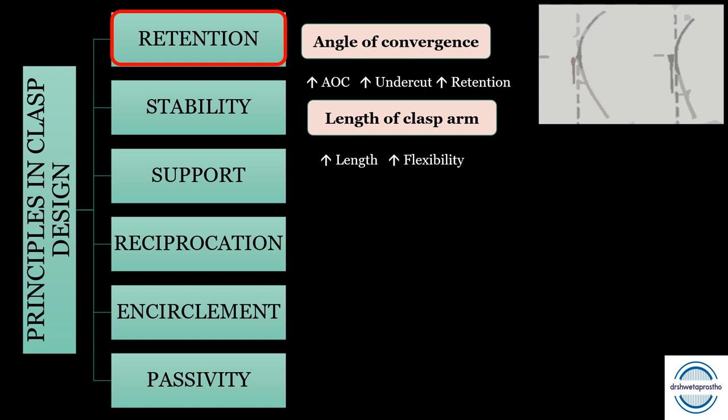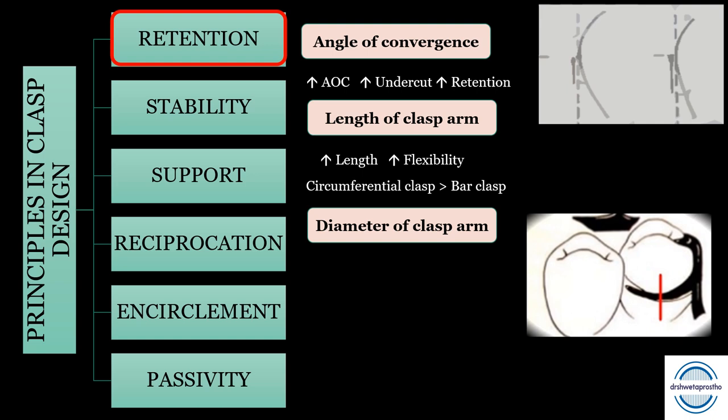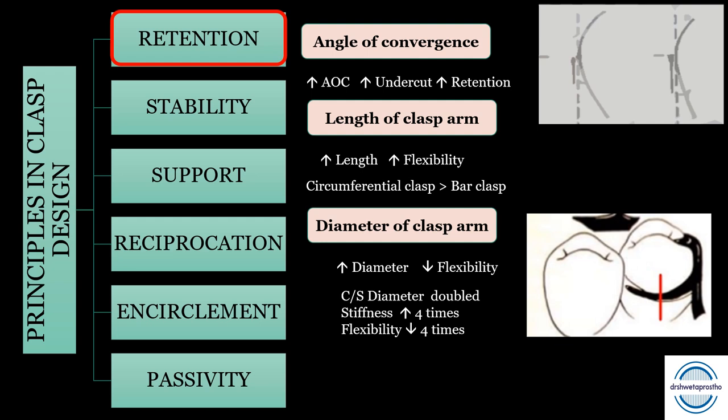The second factor is the length of the clasp arm. When length increases, flexibility of the clasp increases and retention is compromised. When length is kept fixed, the circumferential clasp gives more retention compared to the bar clasp. Another MCQ: the diameter of the clasp arm — when diameter increases, flexibility decreases. The average diameter is measured between the origin and the tip of the clasp.